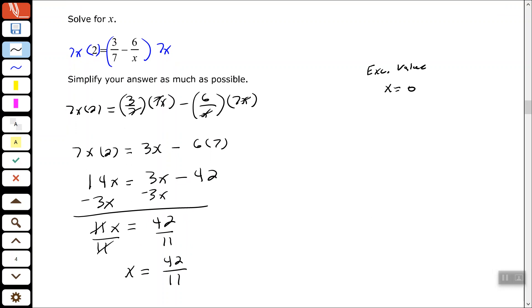All right, we know that cannot be simplified. So we leave it just like that. All right, so again, and that's not our excluded value. So we're good.